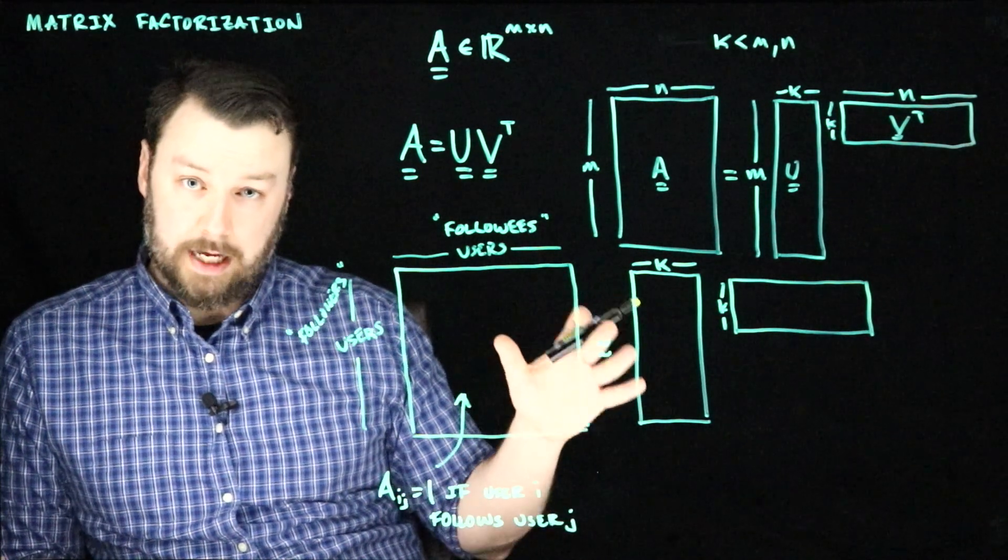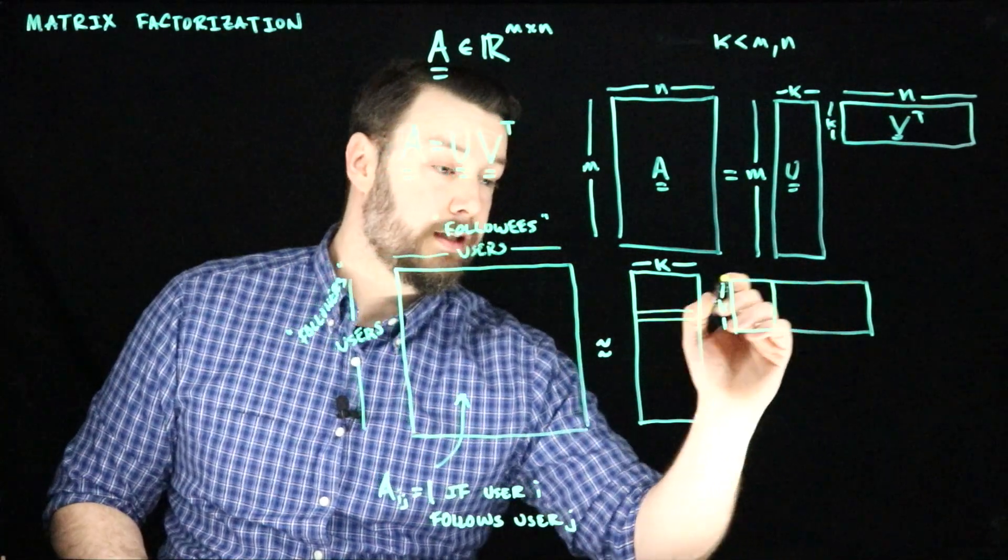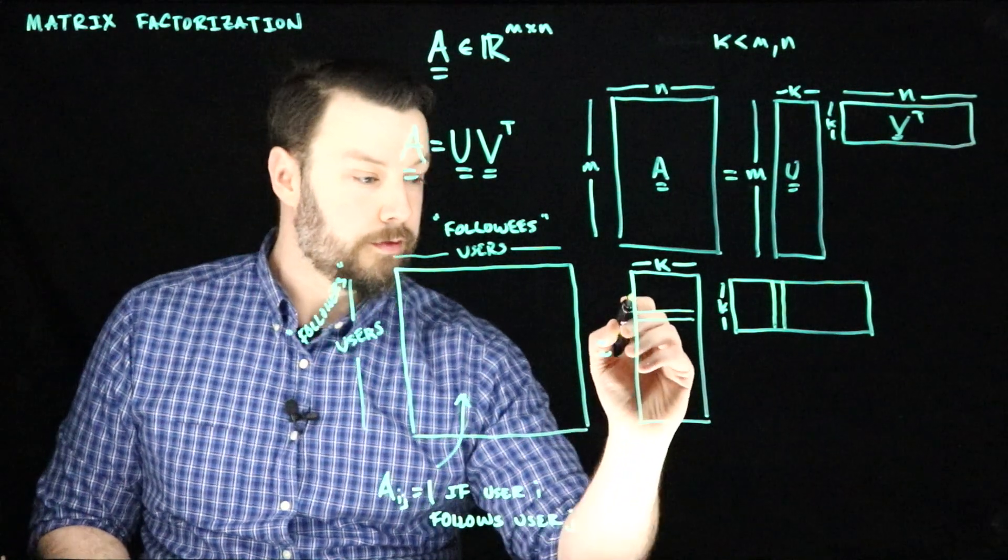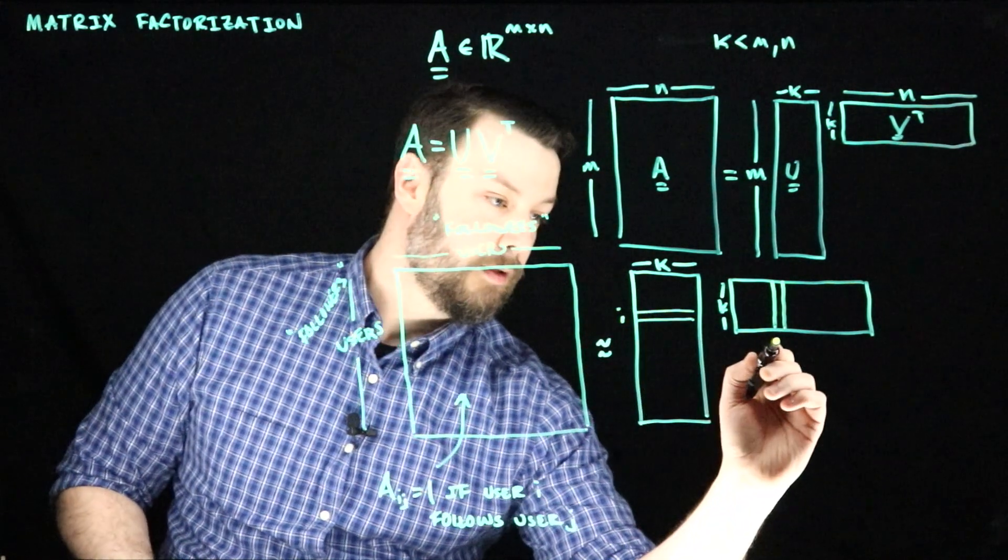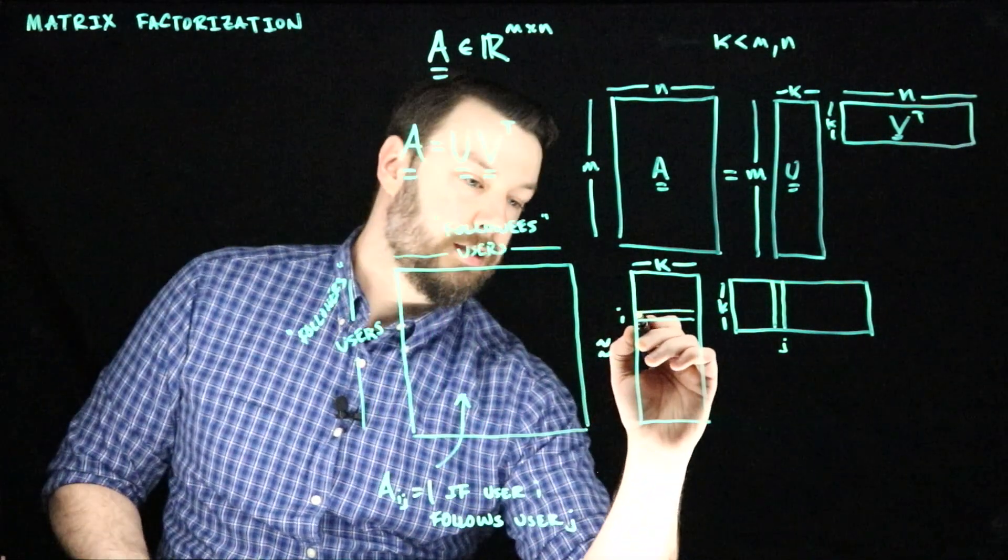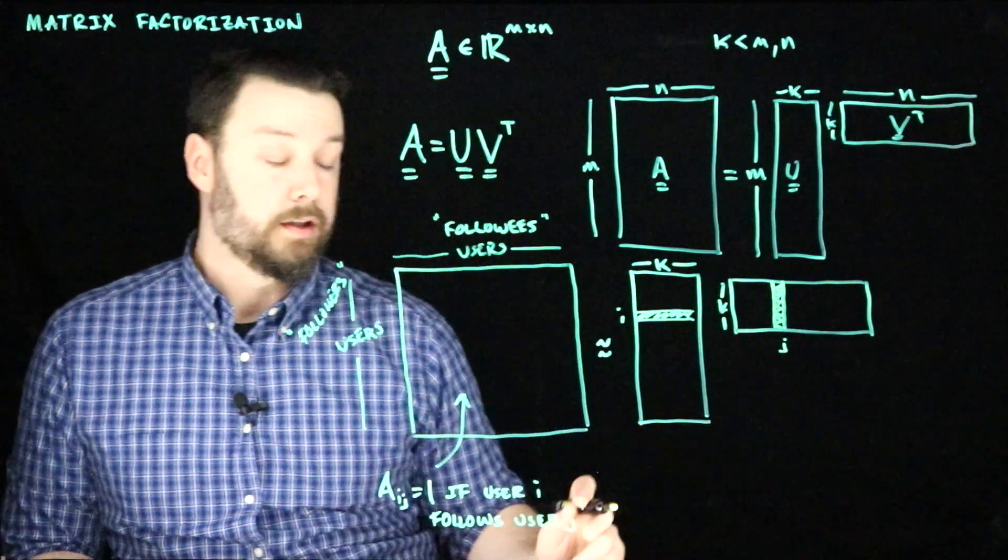So what we're hoping will happen here is that when we have a big follow matrix with a whole bunch of users, then it will again try to find matrices such that for user i and user j, i will tend to follow j if the inner product between this vector and this vector is large.